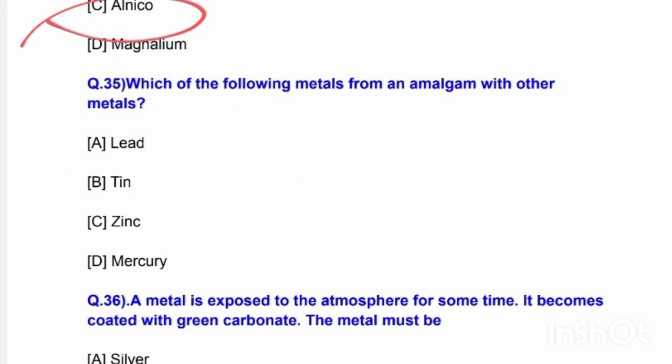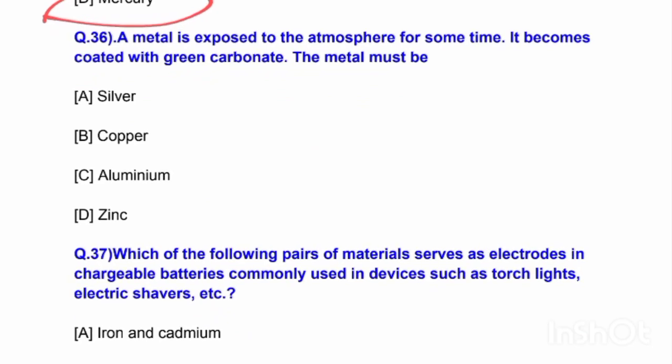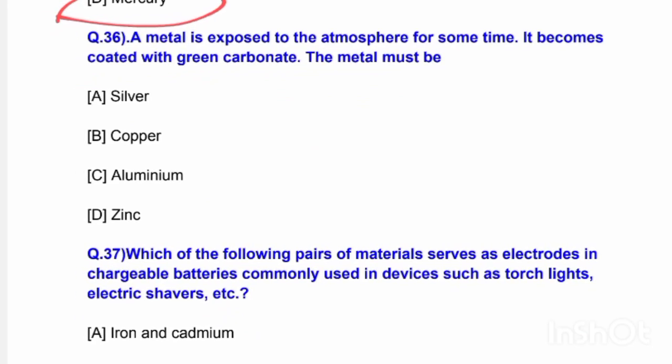Next question: Which of the following metals forms an amalgam with other metals? Options are lead, tin, zinc, and mercury. The correct answer is option D — mercury forms an amalgam with other metals.